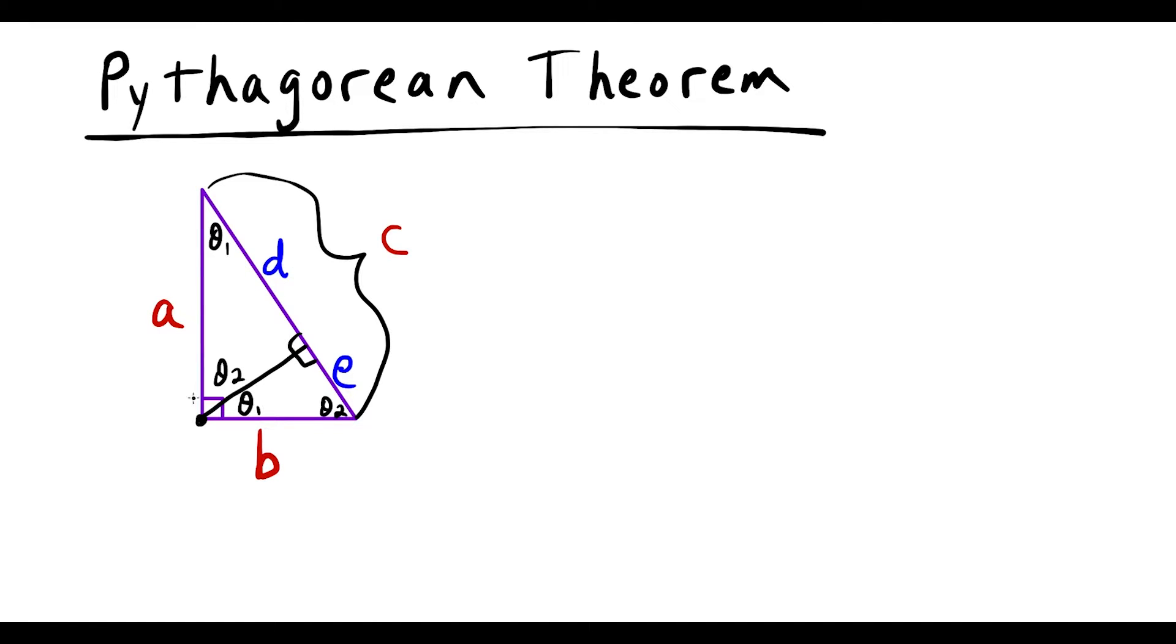Now the first proportion I want to set up here is I'm going to look at the big right triangle and I'm going to set up the ratio a over c. So we're going to have a over c equals, and I want to compare it to the medium triangle but be mindful in the big triangle a was a leg and c is the hypotenuse.